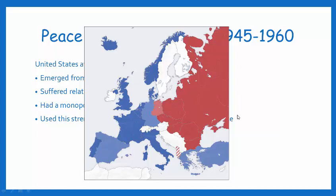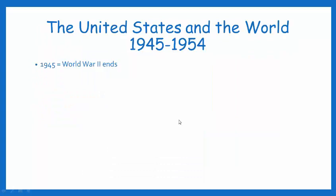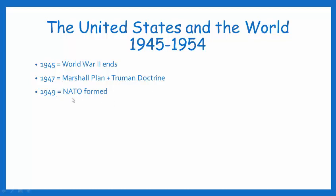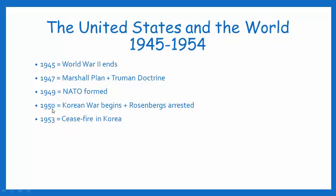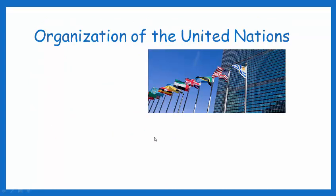Here's a quick timeline of what's going on. In 1945 World War II ends. By 1947, two years later, we institute two important programs: the Marshall Plan and the Truman Doctrine, which really dictate American foreign policy. NATO, the North Atlantic Treaty Organization, a military alliance, is formed in 1949 and is still around today. By 1950 we get involved in the Korean War and begin arresting spies leaking information to the Soviet Union. The Korean War lasts until 1953, and in 1954 we see the McCarthy era — the second Red Scare in America.